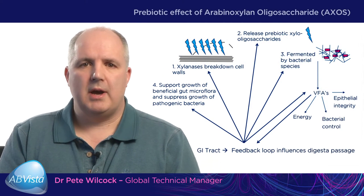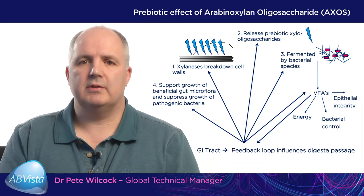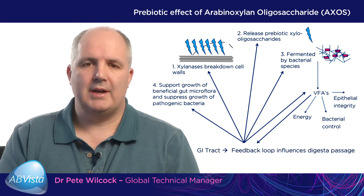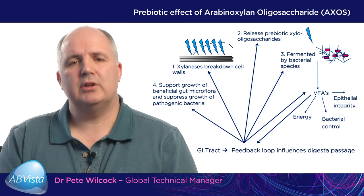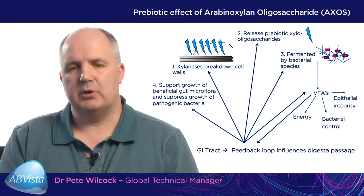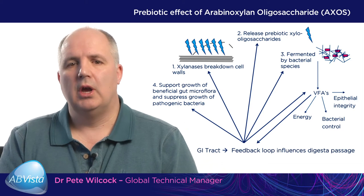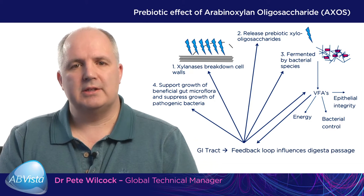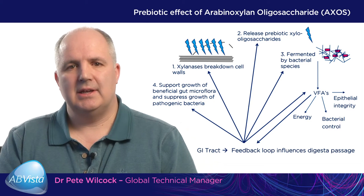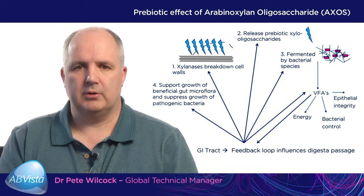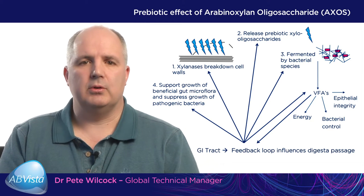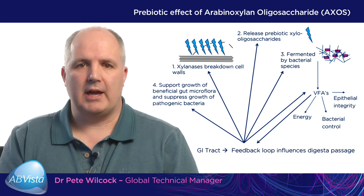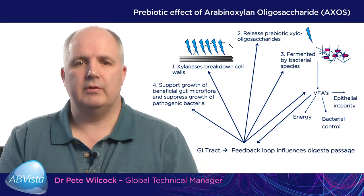We're going to talk in more detail about the third mechanism: the prebiotic effect of the arabinoxylan oligosaccharide, otherwise referred to as AXOS. Starting from the top left and going clockwise, the long-chain arabinoxylan is broken down by the xylanase into small-chain xylooligomers. These xylooligomers are then fermented by the microflora in the lower and hindgut of the animal, and this can have a multitude of effects.